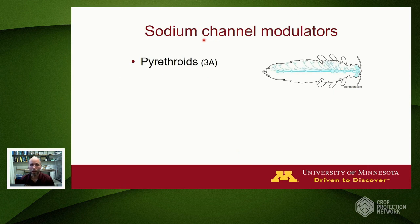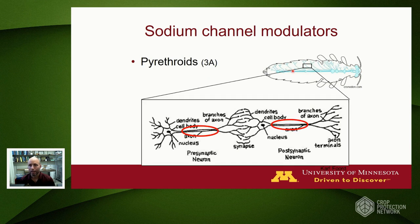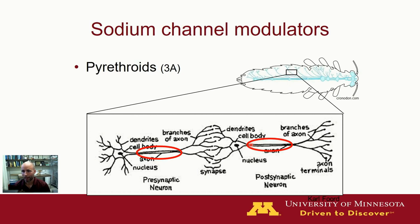The pyrethroid insecticides are called sodium channel modulators. They work on the insect nervous system—you've got the insect brain and the nerves that take messages out to different parts of the body. The pyrethroids act on the axon of the nerve cell, that long stretched-out part of the cell where electrical signals are conducted to send messages from the brain to the body parts or from the body parts to the brain. The pyrethroids disrupt that electrical signal and eventually result in death of the insect.